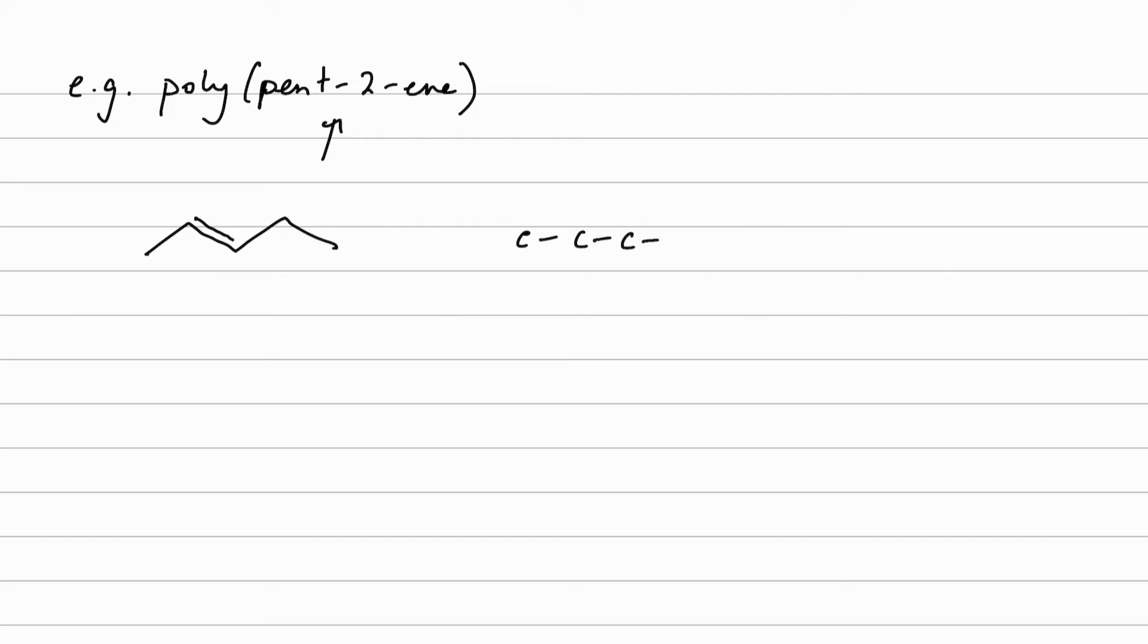In terms of drawing it out with a full displayed formula, we've got the double bond starting on the second carbon. And if it's the full displayed formula, then we have to put in all of the hydrogen atoms, making sure that each carbon is making four bonds.